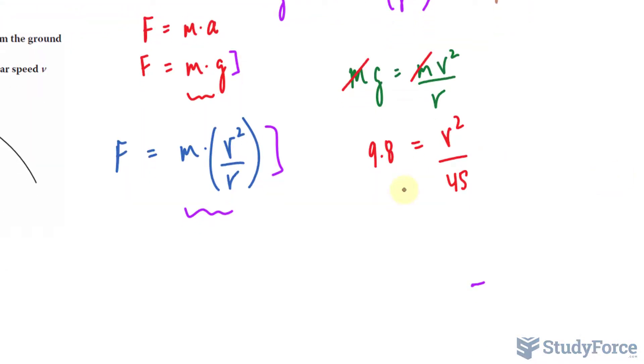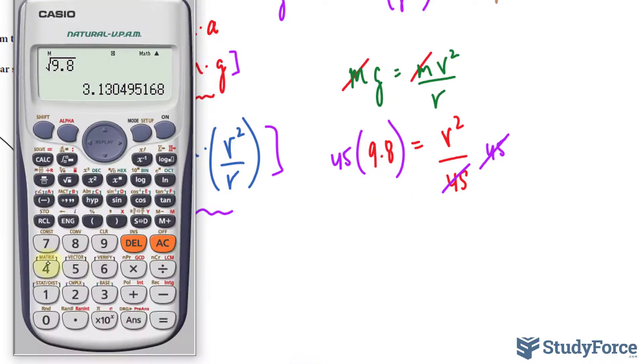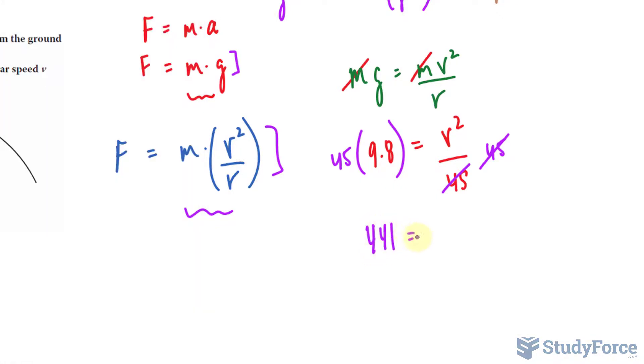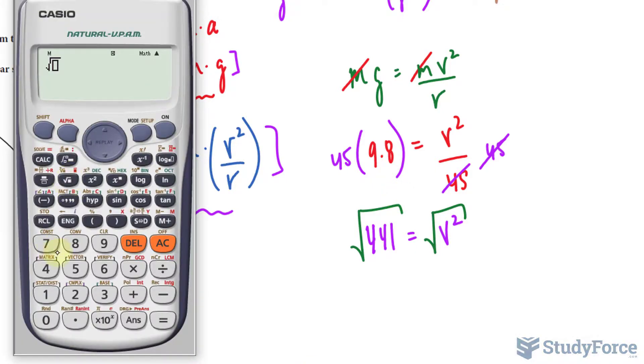Let's solve for v. Multiplying both sides by 45 cancels out the 45. And we have 45 times 9.8, which is equal to 441. We will square root both sides to get rid of this squared value. So, square rooting, remember when you square root a number, you're going to get a positive and negative version. But we only care about the positive here. So, the square root of 441 makes positive 21.